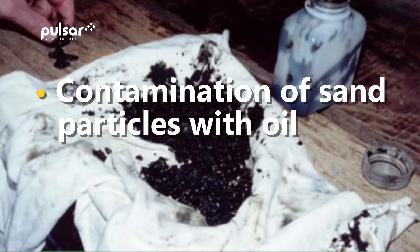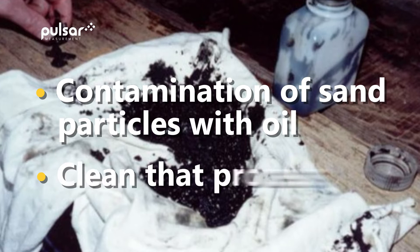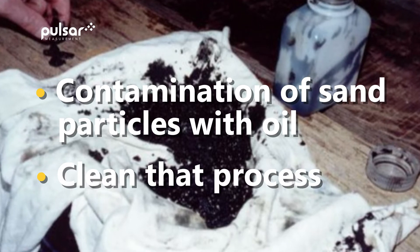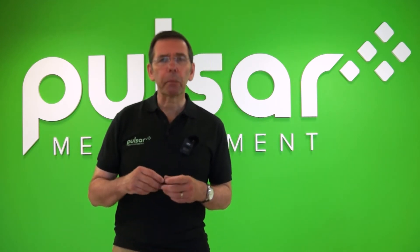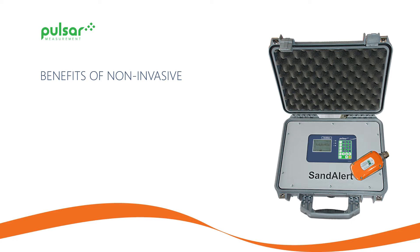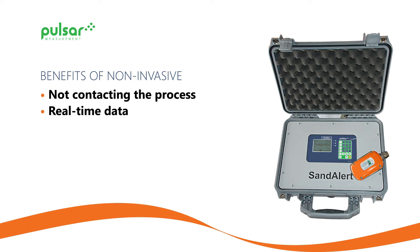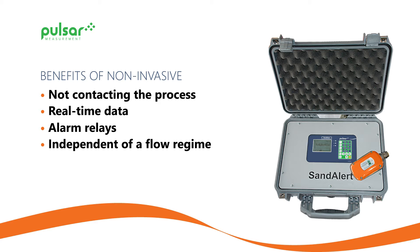Also, the contamination of sand particles with oil means the operator has to clean that process and then deal with landfill as well. There are different types of techniques to monitor sand — invasive and non-invasive. Using non-invasive gives the benefit of not contacting the process, so it's not sacrificial. Electrical resistance probes can be installed in the pipe, but they require downtime to install and don't give real-time data. The non-invasive sand alert detection system gives real-time data and alarms, and is also independent of flow regime.